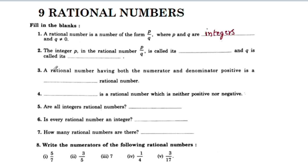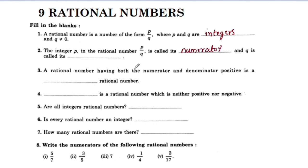Next question: the integer p in the rational number p by q is called its numerator, and q is called its denominator. For rational number p by q, the integer p is called its numerator and q is called its denominator.